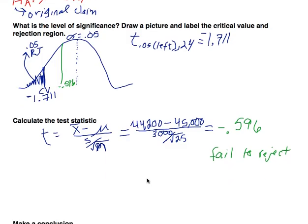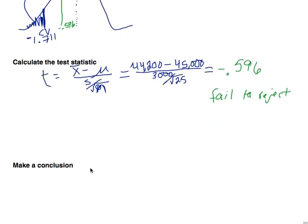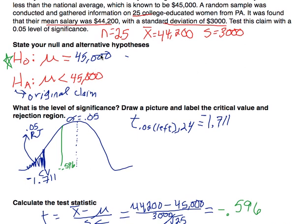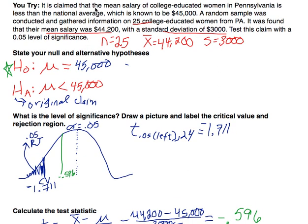So the conclusion is: because the test statistic is not in the rejection zone, we fail to reject the null hypothesis. There is evidence to support that there's really no difference between our sample and $45,000. The null seems a much more likely occurrence than the alternative. Because we are failing to reject, there's no evidence to support the original claim that the mean salary is less than $45,000, given what we know about this sample.